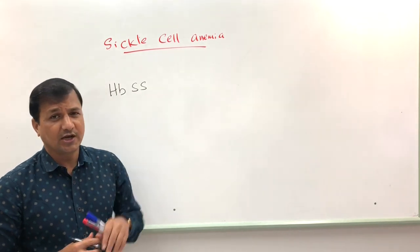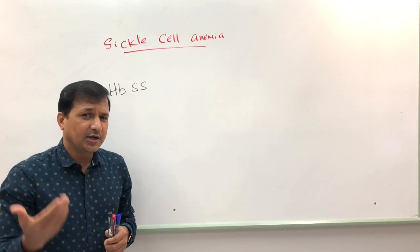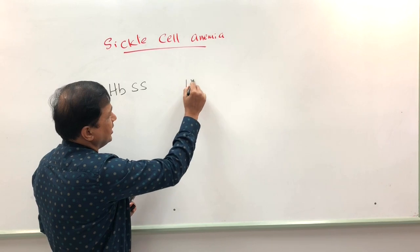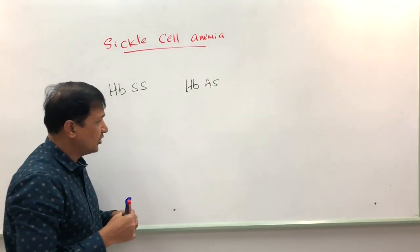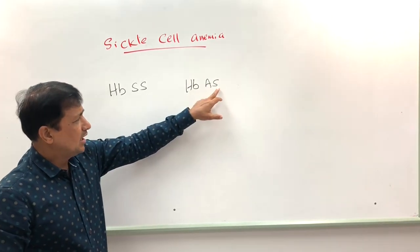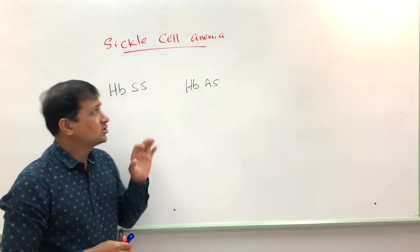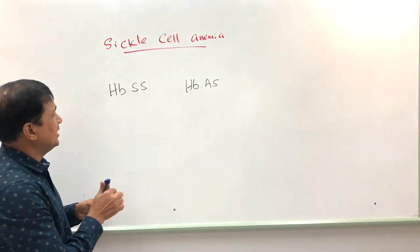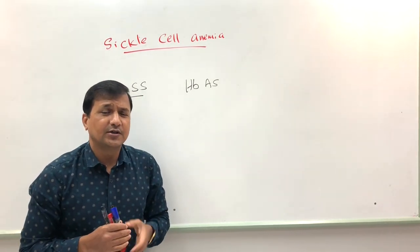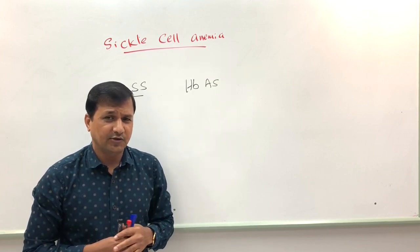If only one beta globin is affected and the other is normal adult hemoglobin, we write it as HbAS — where HbA is the normal adult hemoglobin beta chain and S is the sickle beta chain. This is sickle cell trait. Sickle cell anemia is the homozygous condition where both beta globin genes are mutated.